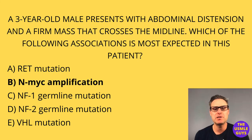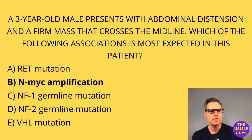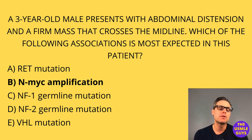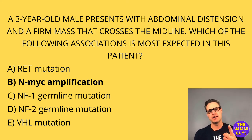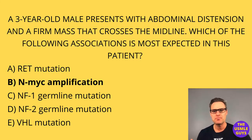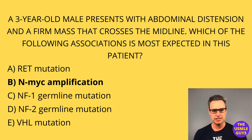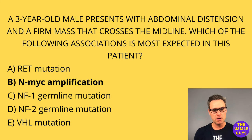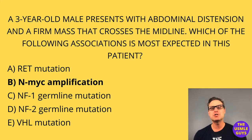The correct answer here is B, N-myc amplification. Let's go over the most common tumor of the adrenal medulla in children — the neuroblastoma — and in adults, the pheochromocytoma. Starting with the neuroblastoma: it's the most common adrenal medulla tumor in children, usually seen before four years of age, and it originates from neural crest cells. One of its characteristics is that it can occur anywhere along the sympathetic chain.